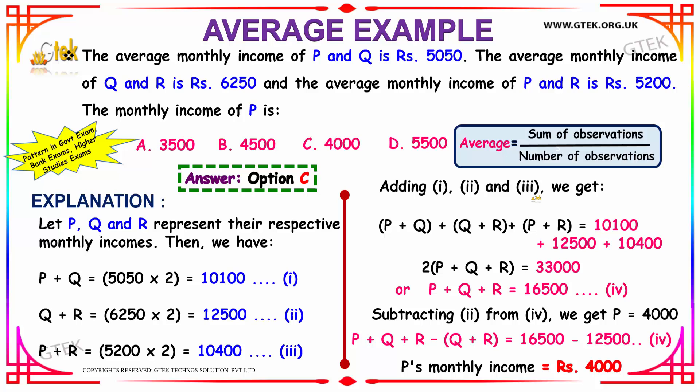Adding equations 1, 2 and 3, we get P plus Q plus Q plus R plus P plus R, which is equivalent to 2 times P plus Q plus R. Summing up the right side values, you get 33000. So P plus Q plus R is 16500.